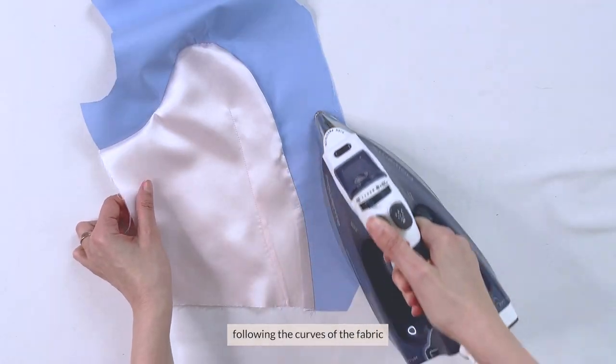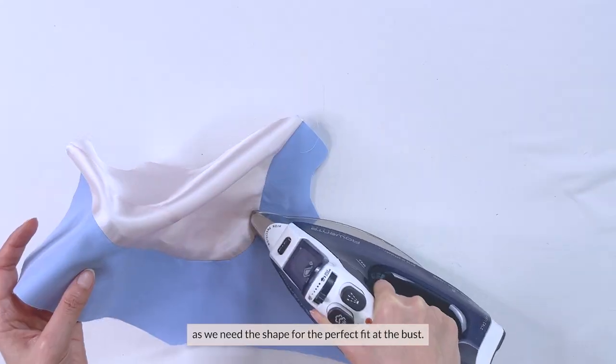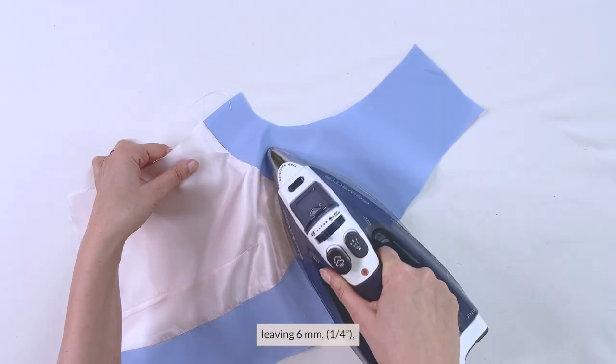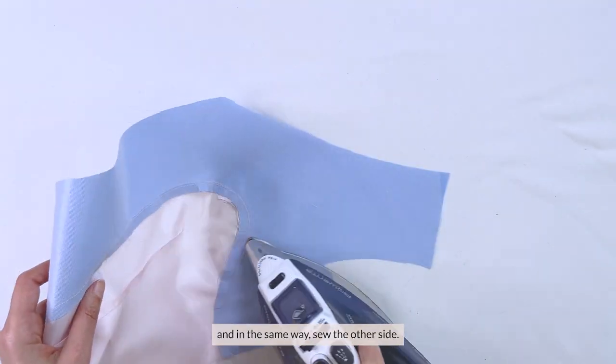Press out the lining following the curves of the fabric as we need the shape for the perfect fit at the bust. Then trim the seam allowances leaving 6 millimeters or a quarter of an inch and in the same way sew the other side.